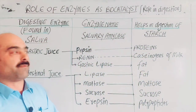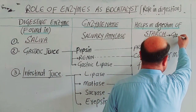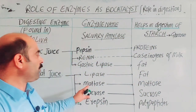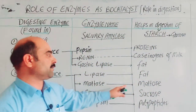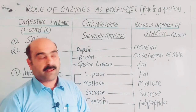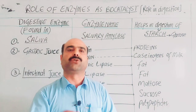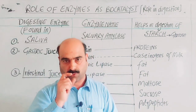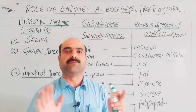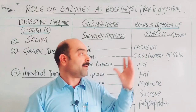Salivary amylase works to digest starch and convert starch to maltose or glucose. So the digestion of starch starts just right from the mouth. Protein digestion does not occur in the mouth — there are no enzymes in the mouth for protein breakdown.